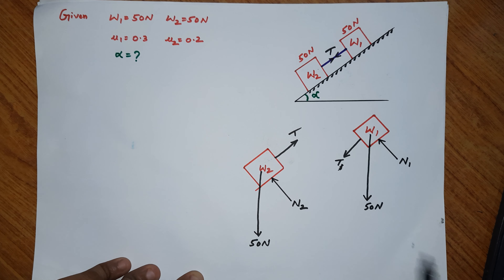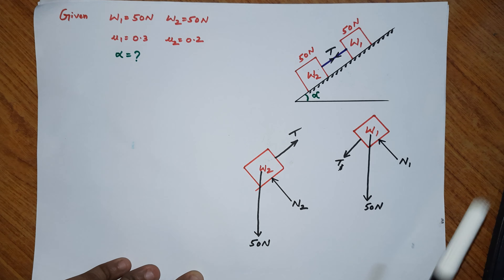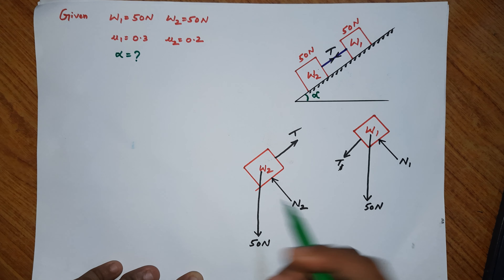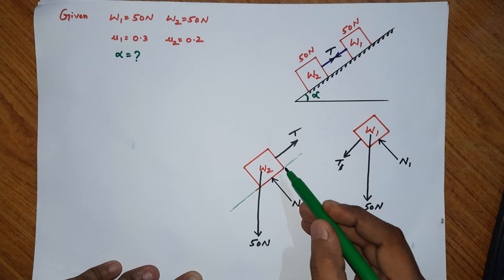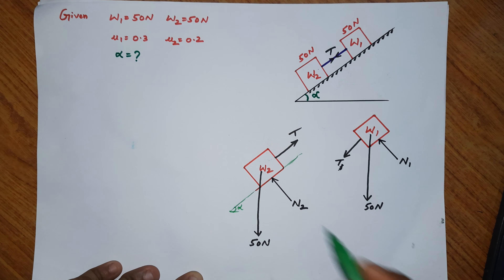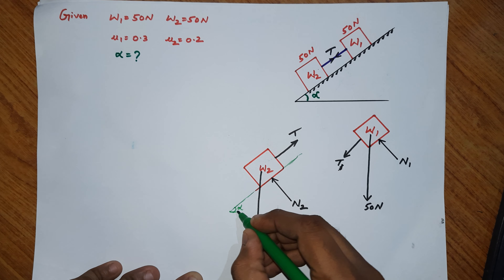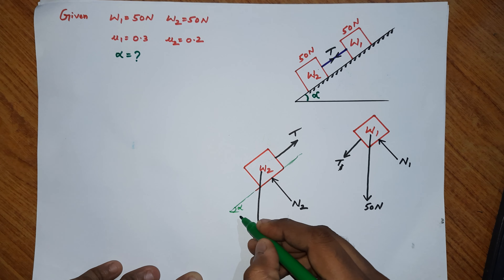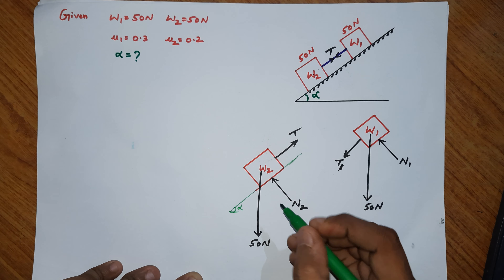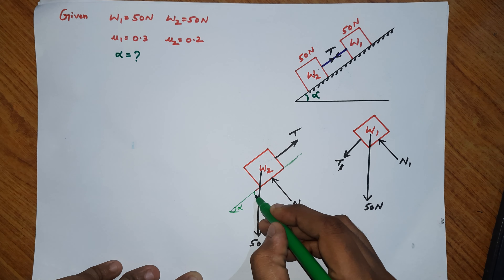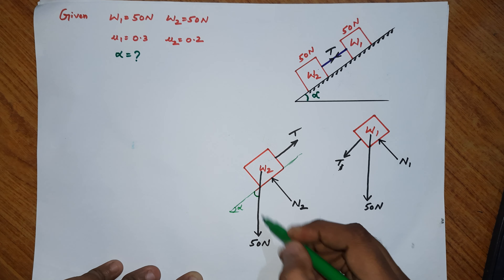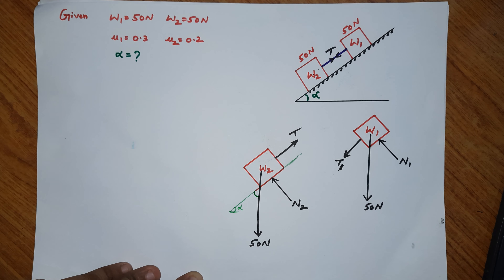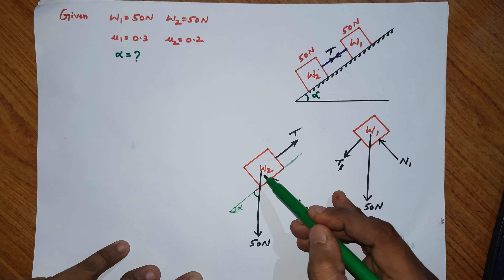Now since the inclined plane makes angle alpha with horizontal, when we draw the free body diagram we need to resolve forces. The angle that appears in the triangle is alpha. To resolve forces along and perpendicular to the inclined plane, we note the angle between the weight force and the incline direction is 90 minus alpha.